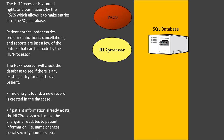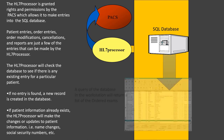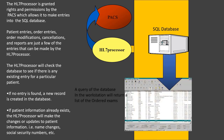The HL7 processor will check the database to see if there is any existing entry for a particular patient. If no entry is found, a new record is created in the database. If the patient entry exists, the HL7 processor will make the changes or updates to the patient's information — for example, name changes, social security numbers, etc. A query of the database at the workstation will then return a list of the ordered exams.